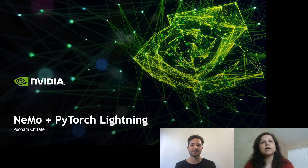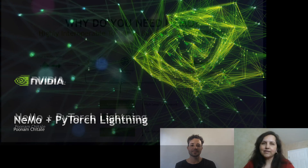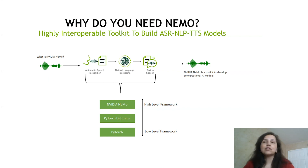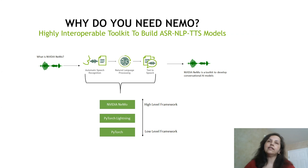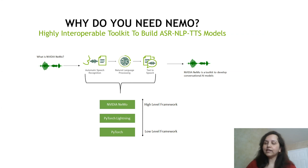I particularly want to talk about our partnership with PyTorch Lightning. So why do you need Nemo? Nemo is a toolkit for building state-of-the-art conversational AI models. Conversational AI models are really big — they're trained on a lot of data, they have a lot of hyperparameters, and they are complex architectures. Nemo is a higher level framework based on PyTorch and PyTorch Lightning that helps people build these models quickly and easily.